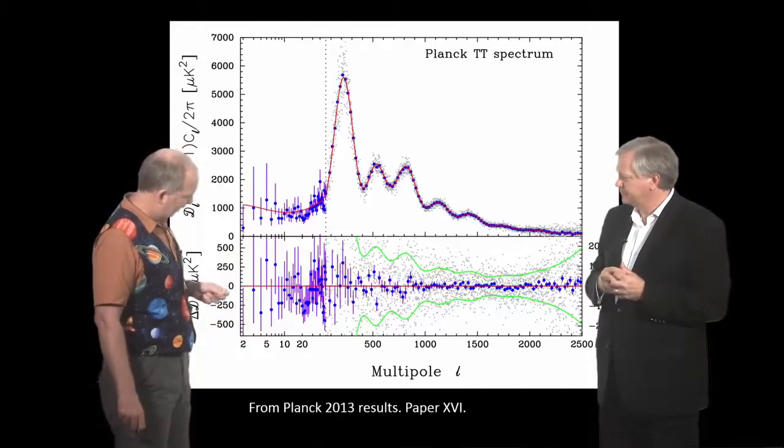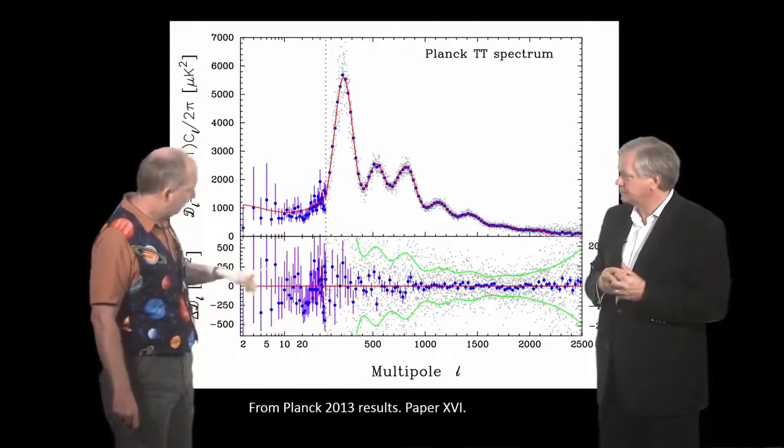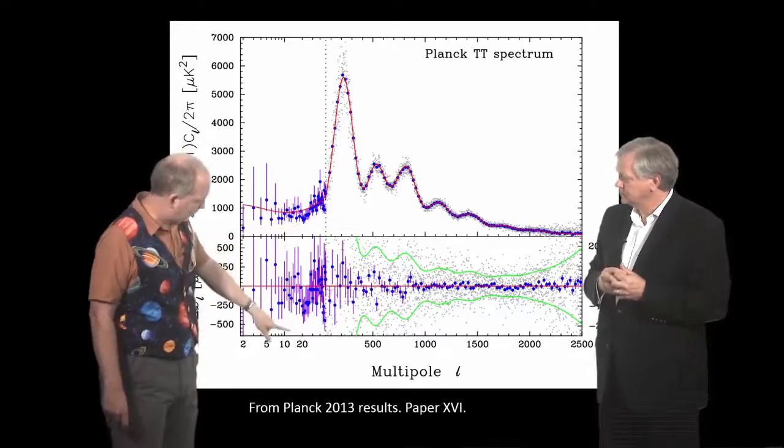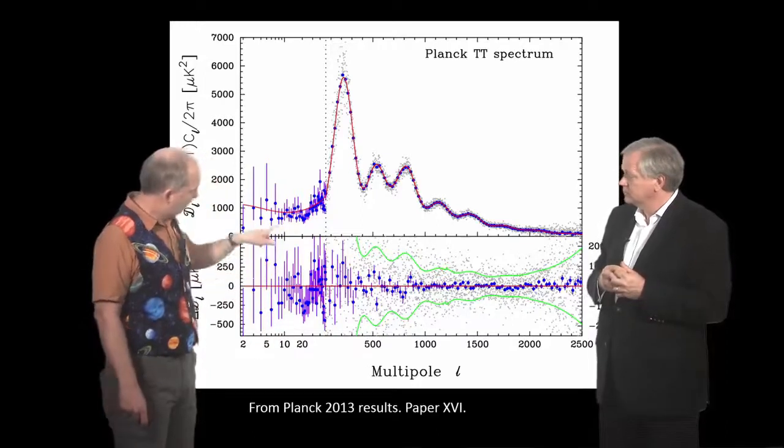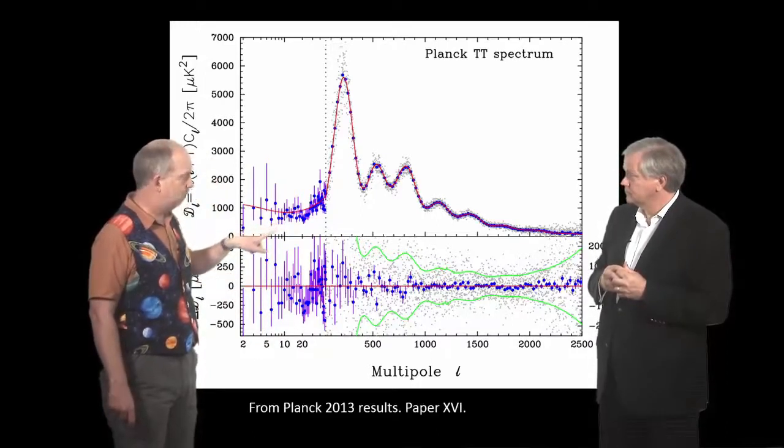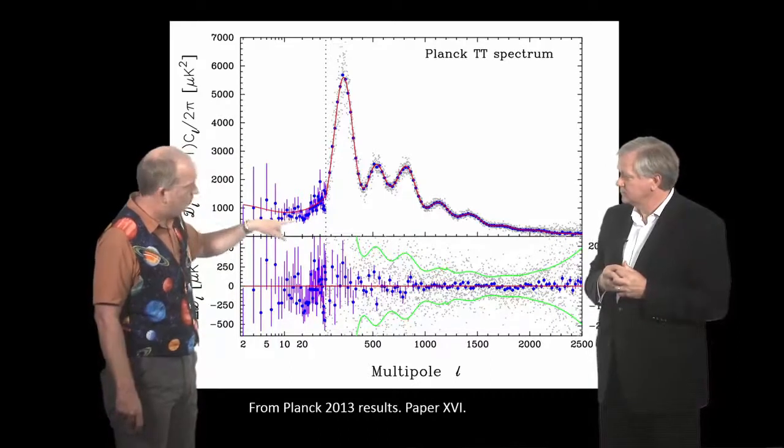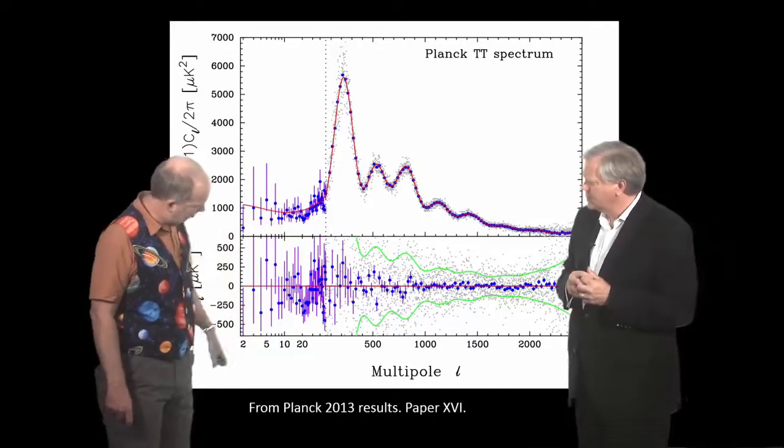There is one anomaly here, or possible anomaly, up here on the very large scale, so multipoles in the 20s. Both the WMAP data and the Planck data were a bit low over here. You can see it's a bit down there.